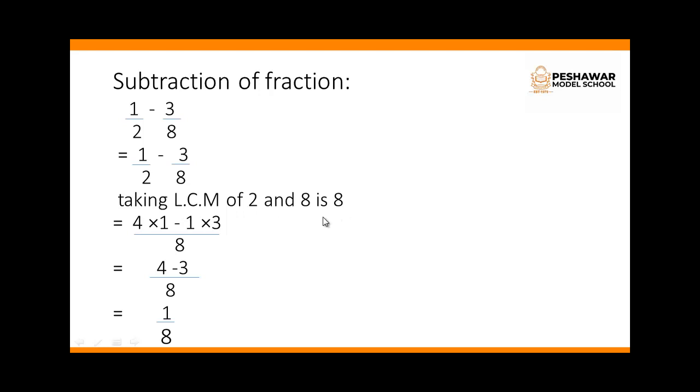So the LCM of 2 and 8 is 8. Now we multiply 4 with 1 because 2 fours are 8, and we multiply 1 with 3 because 8 ones are 8. Now we have to subtract: 4 ones are 4 and 3 ones are 3.